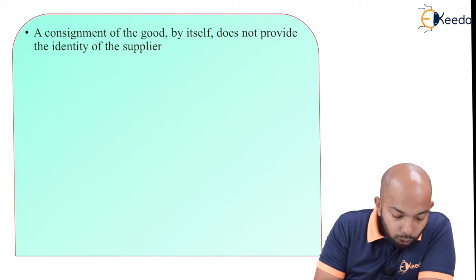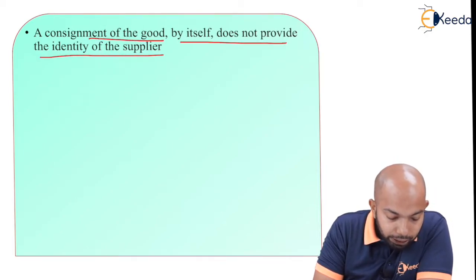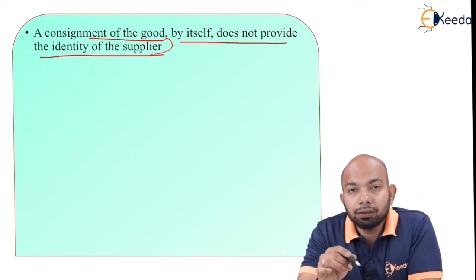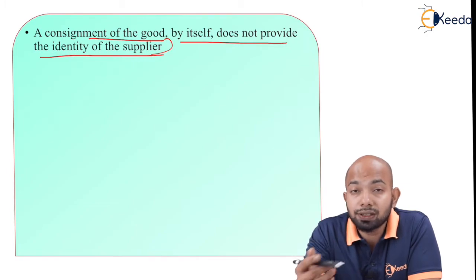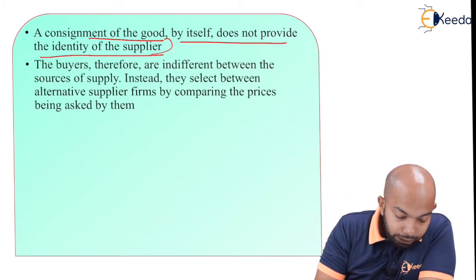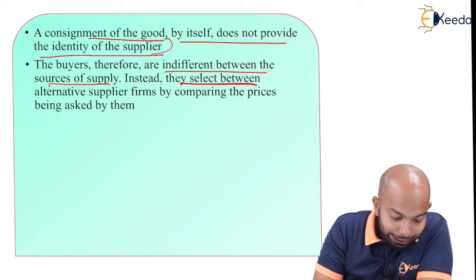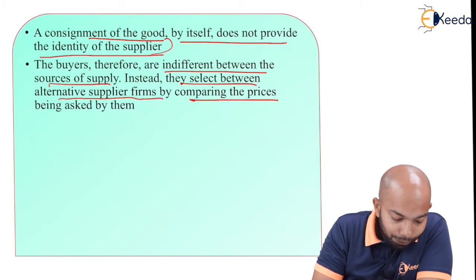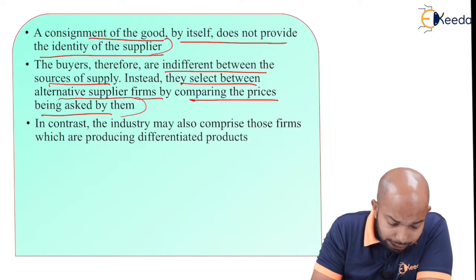A consignment of the good by itself does not provide the identity of the supplier — just selling tires doesn't give out an identity of what kind of supplier you are; you need to have a brand name for it. The buyers therefore are indifferent between the sources of supply; instead they select between alternative supply firms by comparing the prices being asked by them.